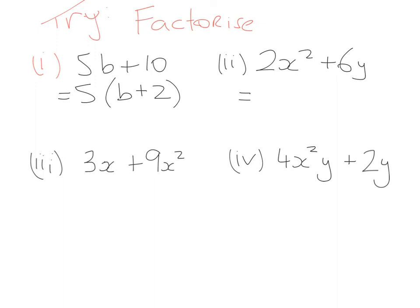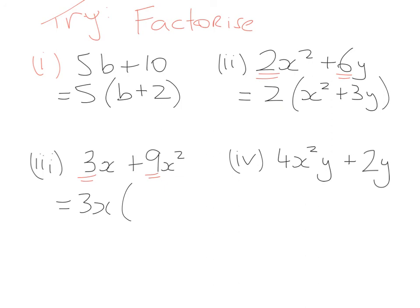Third question: the highest common factor between 3 and 9 is 3, and the highest value of x in common between the two terms is just x. So we bring 3x outside. Inside: 3x times what gives me 3x? Really important — it's just 1. And 3x times what gives me 9x²? Well 3 × 3 = 9 and x × x = x². So the answer is 3x(1 + 3x).